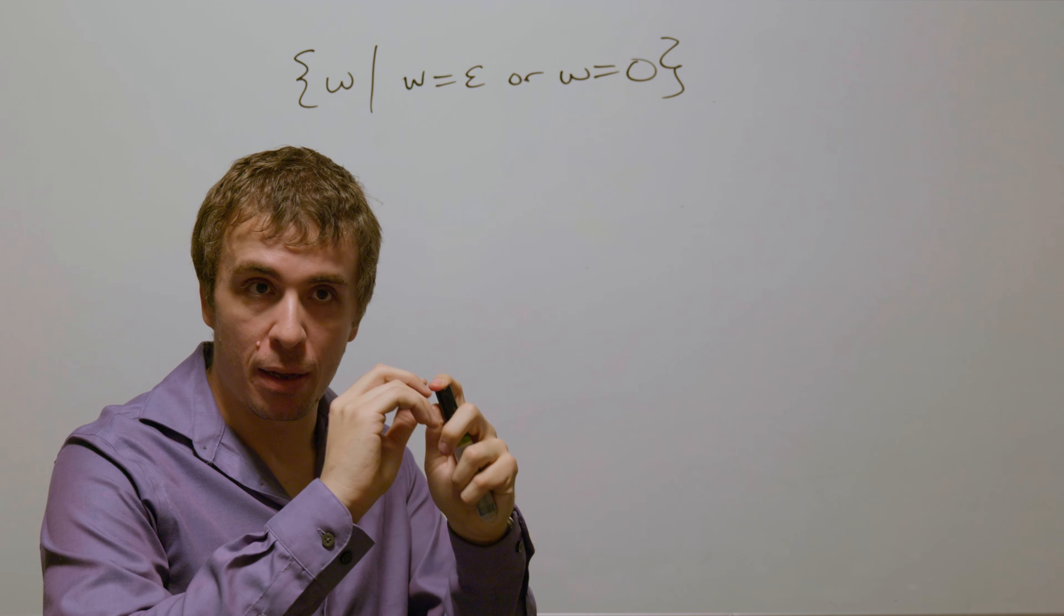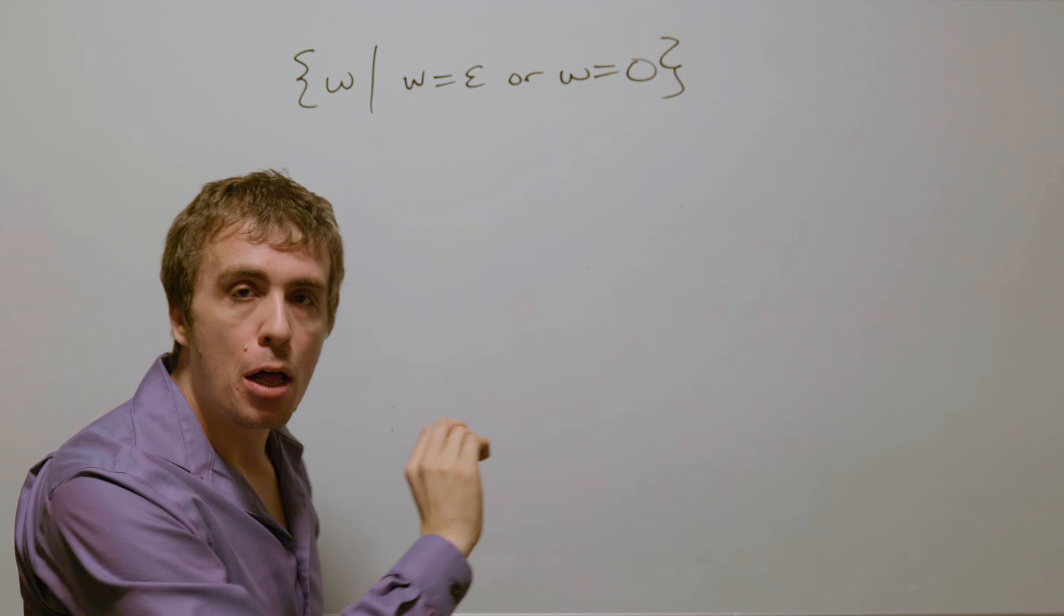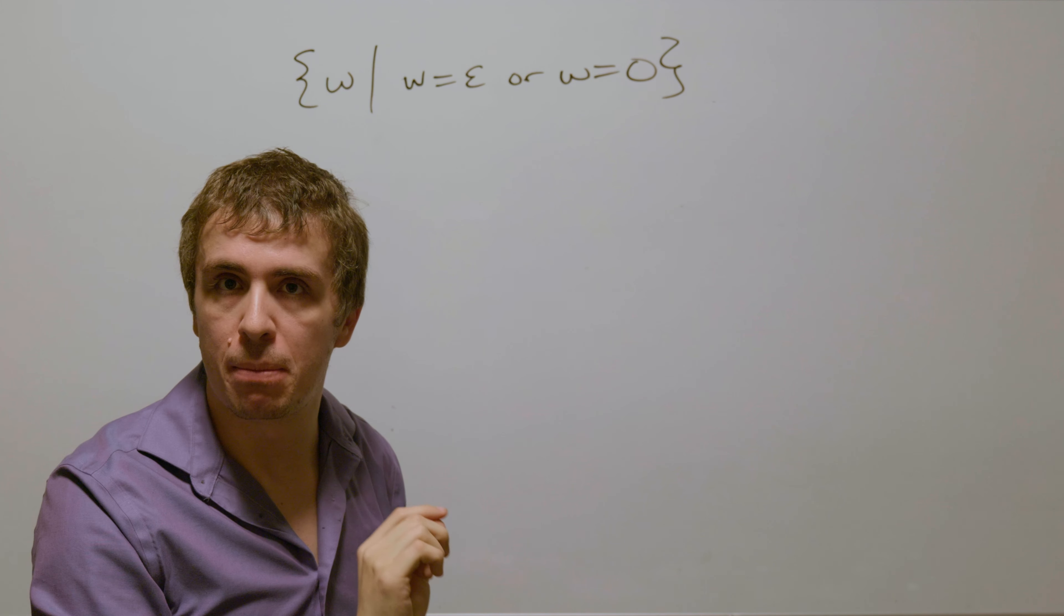And so therefore, the finite automaton is going to be very small. And what we need is that every other string is not accepted by the DFA.